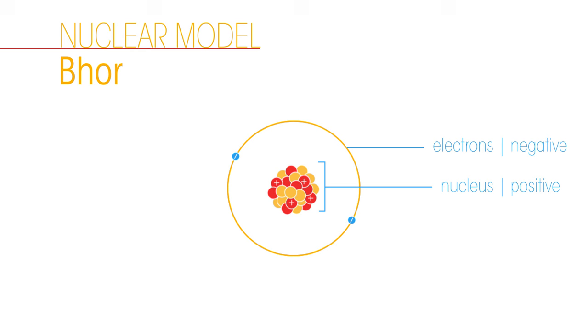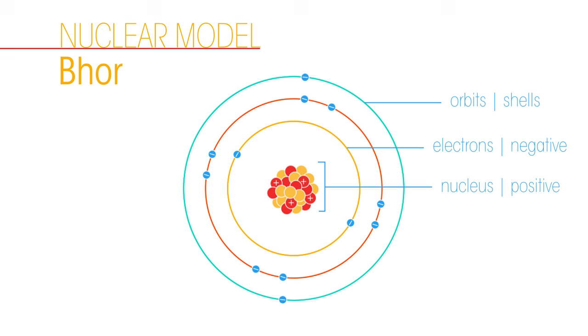Bohr developed Rutherford's nuclear atom model further. He concluded from his own experiments that electrons occupy specific orbits or shells around the nucleus. In other words, electrons orbit the nucleus similar to how planets orbit the sun. However, electrons can only orbit at specific distances and within specific energies.